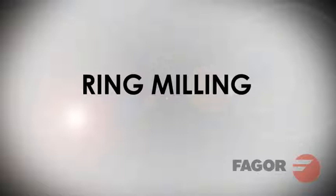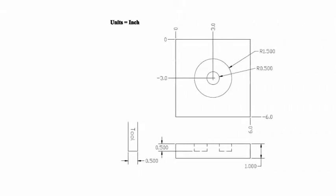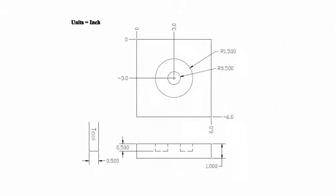In this program and example, we will be making a ring milling inside of our workpiece. From our example part print, you will see that we have two defined radii at the center of our workpiece. A pocket will be machined between the outer and inner radii, leaving behind an island or a boss at the center.